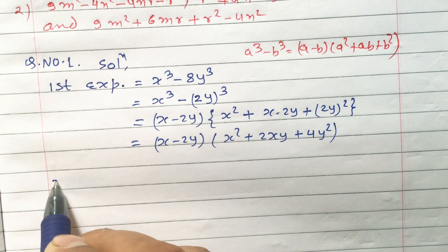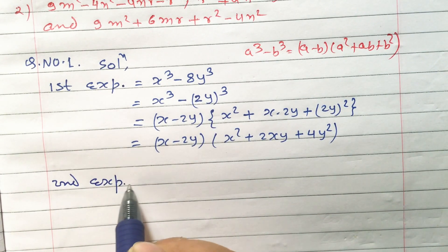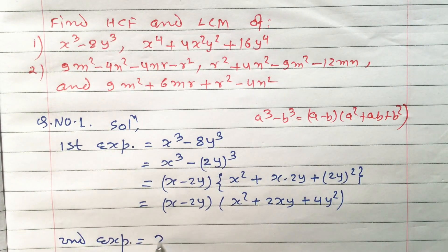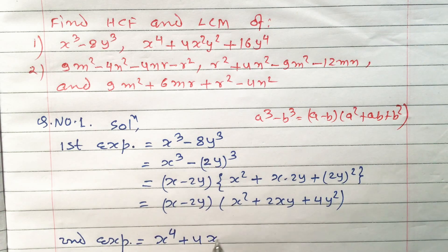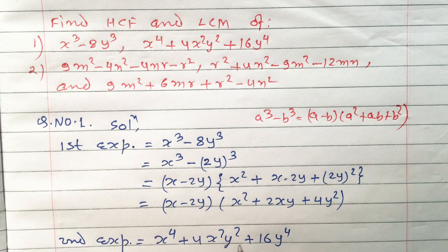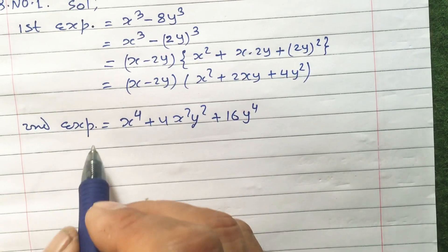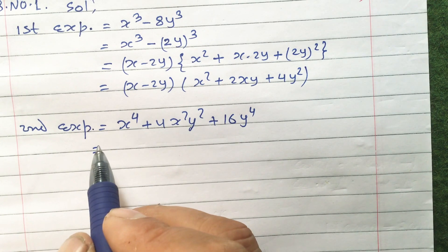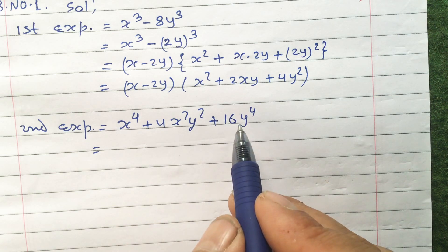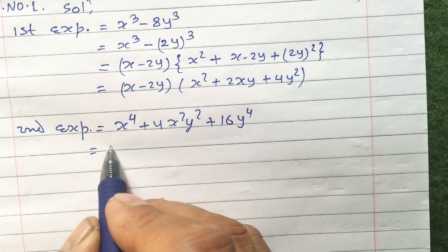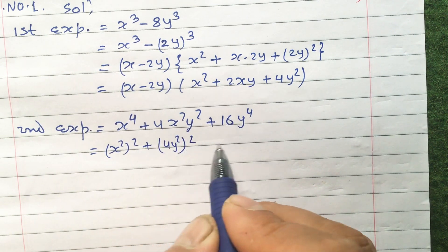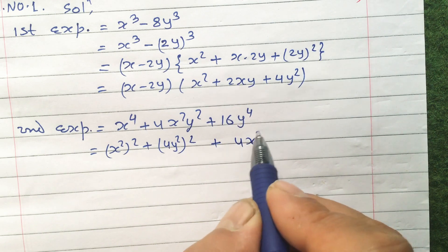Now the second expression. The second expression is x to the power 4 plus 4x square y square plus 16y to the power 4. This we can factorize — with power 4 and power 4 as two terms, we will apply the formula of a square plus b square.